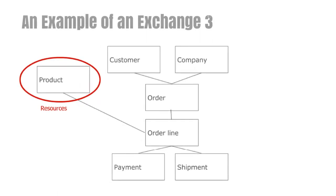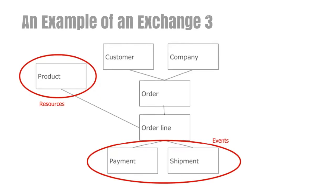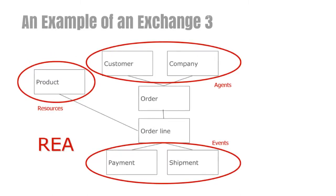Let us consider the example once more and identify what kinds of entities appear. Starting with a product, we can say that a product is a kind of resource, something that is of value to someone. We also have events that occur, like shipments of a product from the company to the customer, or the payment by the customer to the company. Both these are events that transfer resources from one agent to another. Finally, there are agents — in this example, the company and the customer.